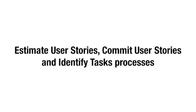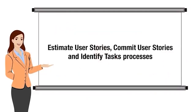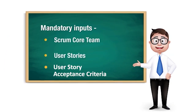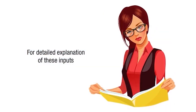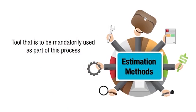Now let's look at the mandatory inputs, tools, and outputs of the Estimate and Commit User Stories process. The mandatory inputs are: Scrum Core Team, User Stories, and User Story Acceptance Criteria. The tool that is to be mandatorily used as part of this process is Estimation Methods. Numerous estimation methods can be used as tools to estimate user stories.